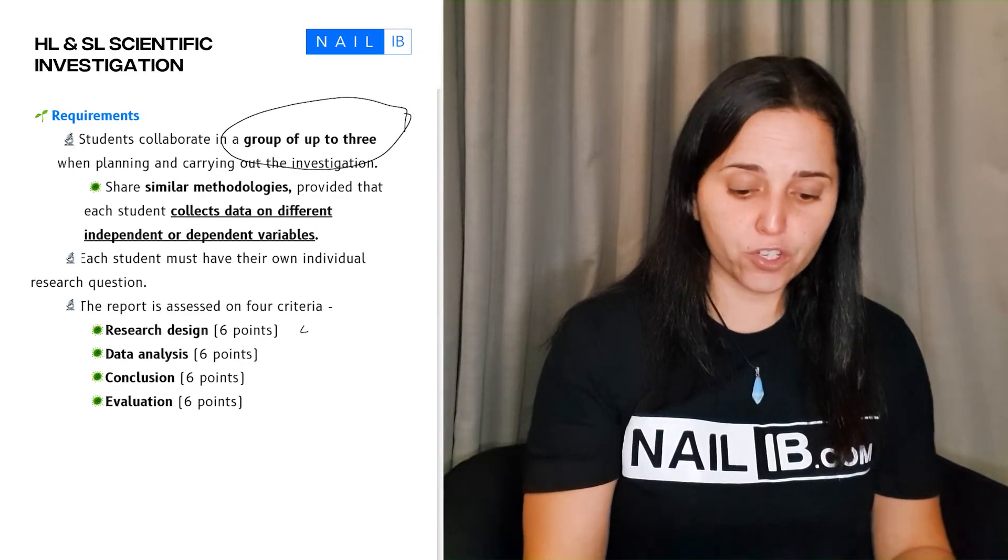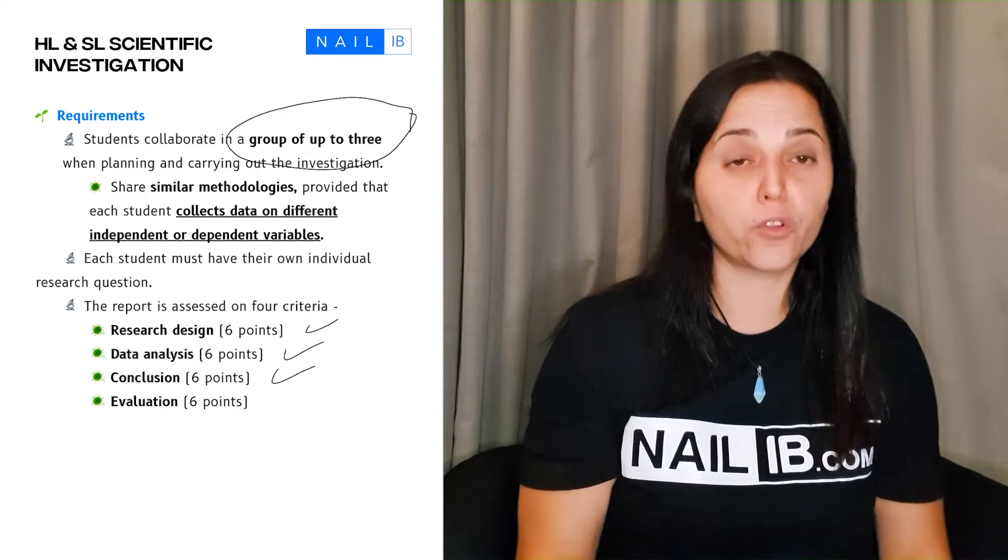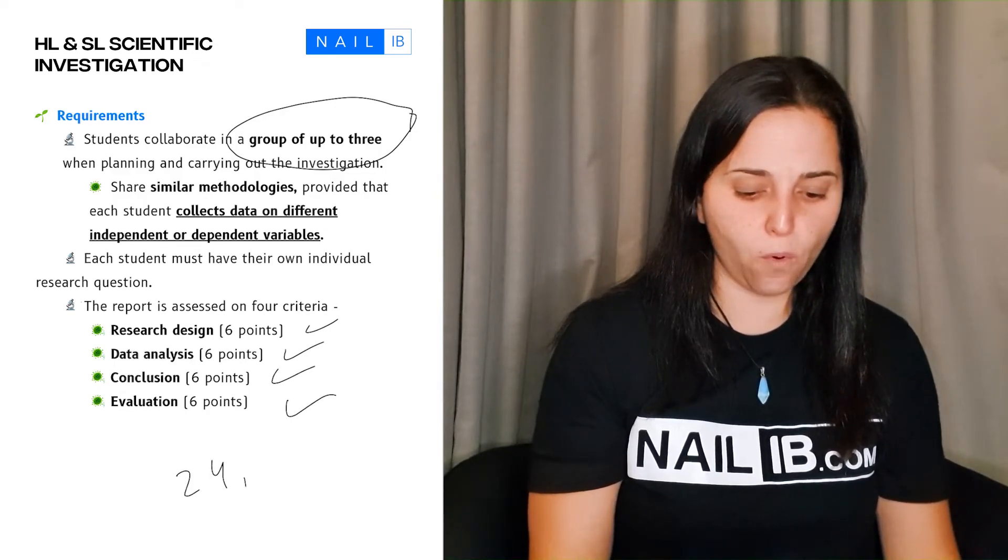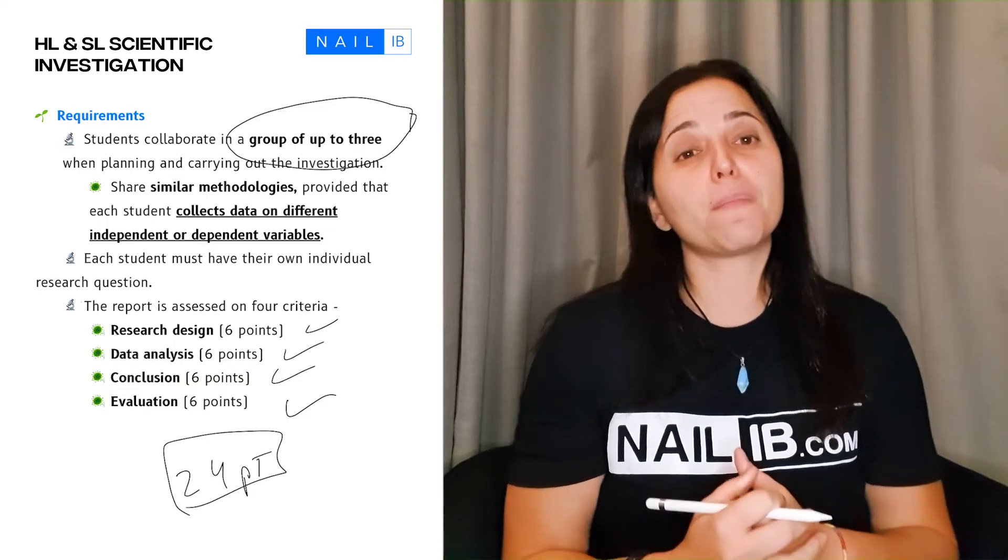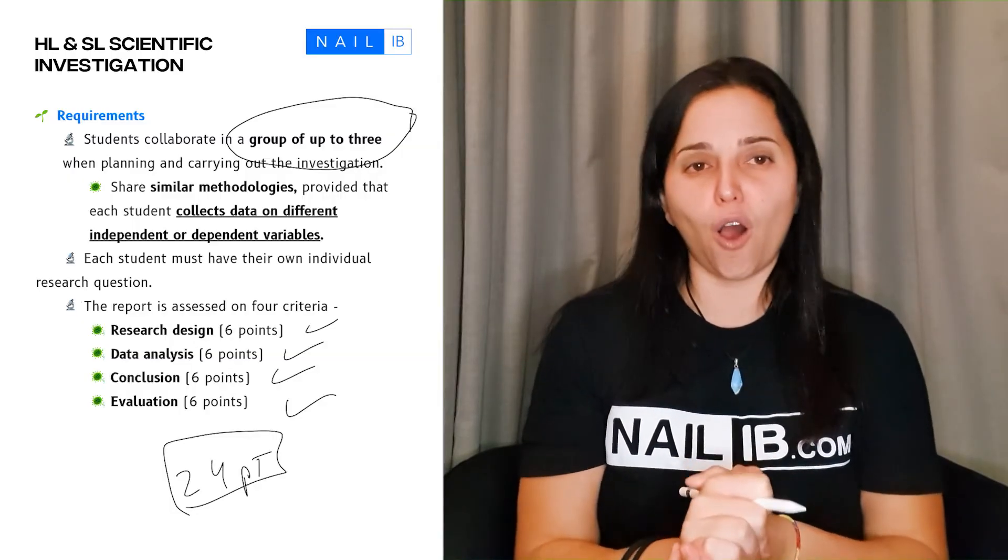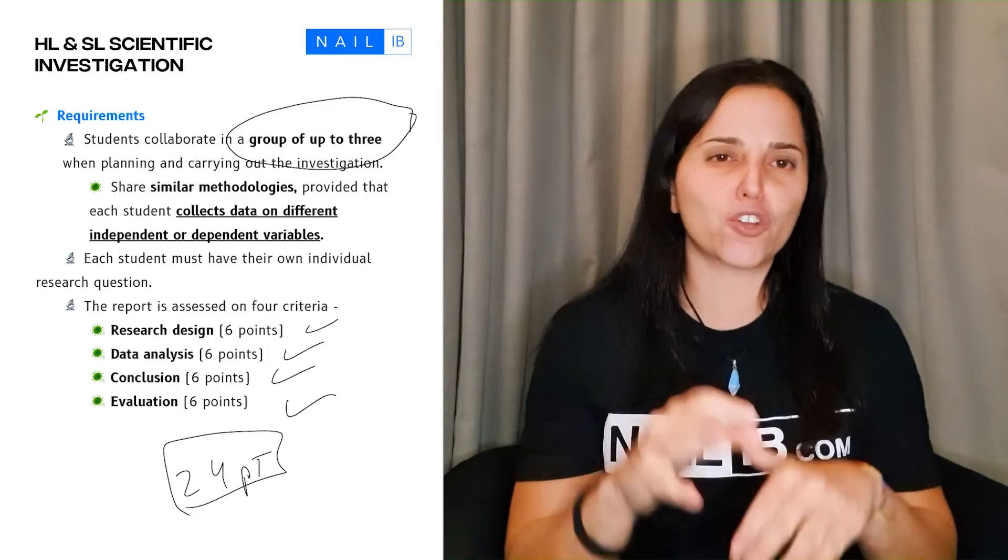What is this lab made of? This lab has a research design which is six points, a data analysis which is six points, a conclusion which is six points, and an evaluation which is six points—that's 24 points total. Your lab is up to 24 points. There will be a section video which is related to all these scientific investigations, and we're going to go very much in detail on how to make sure you get that seven in the lab. So this is what the IB biology program is about.